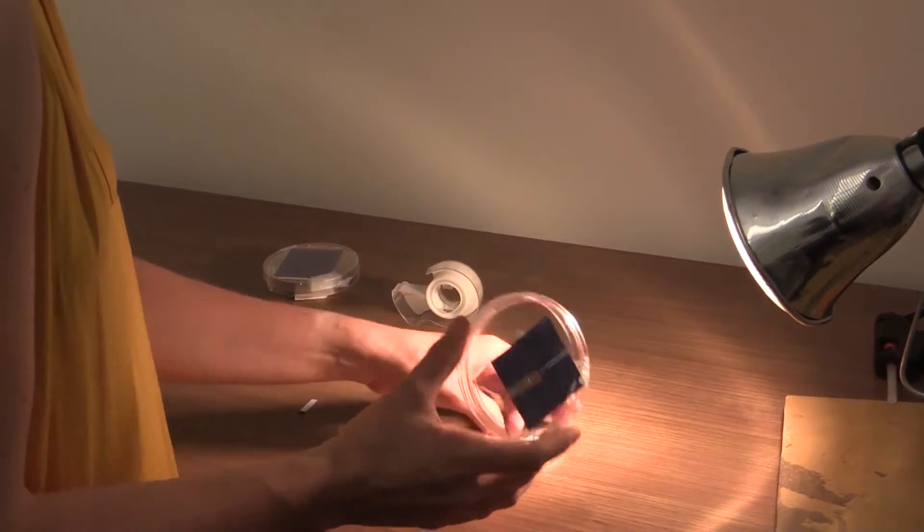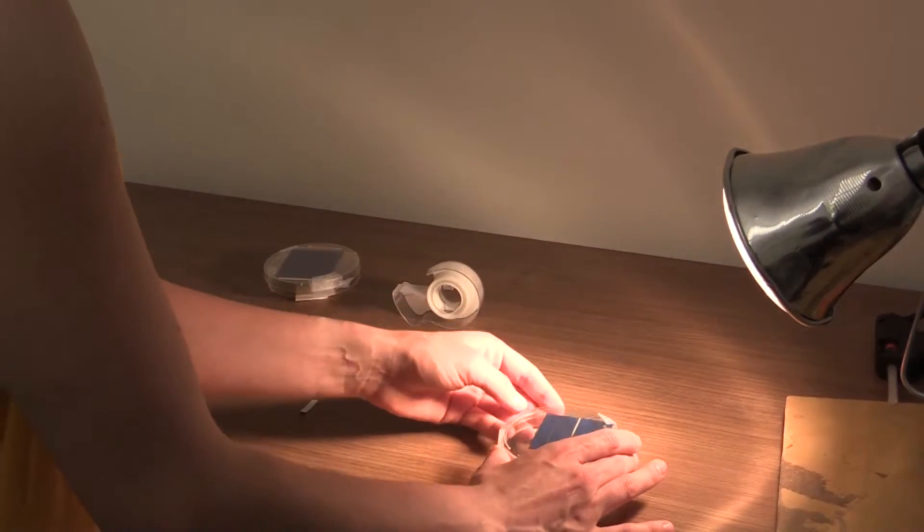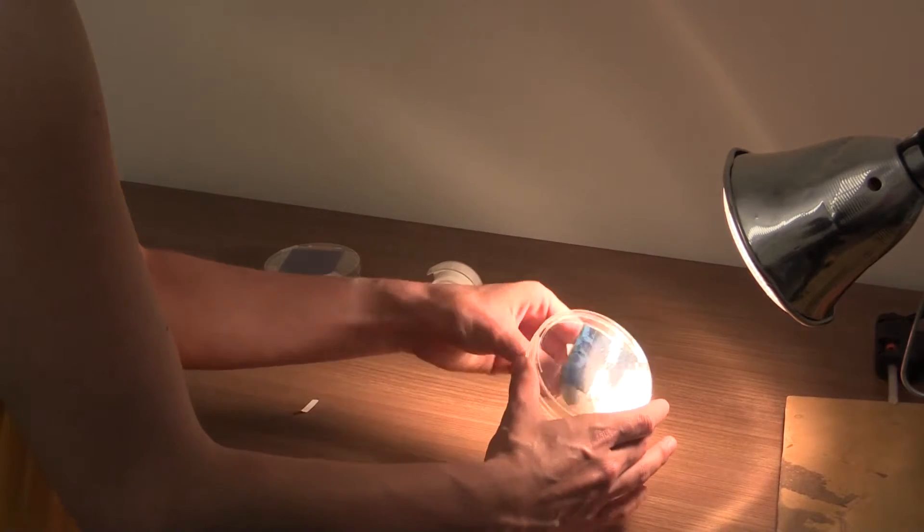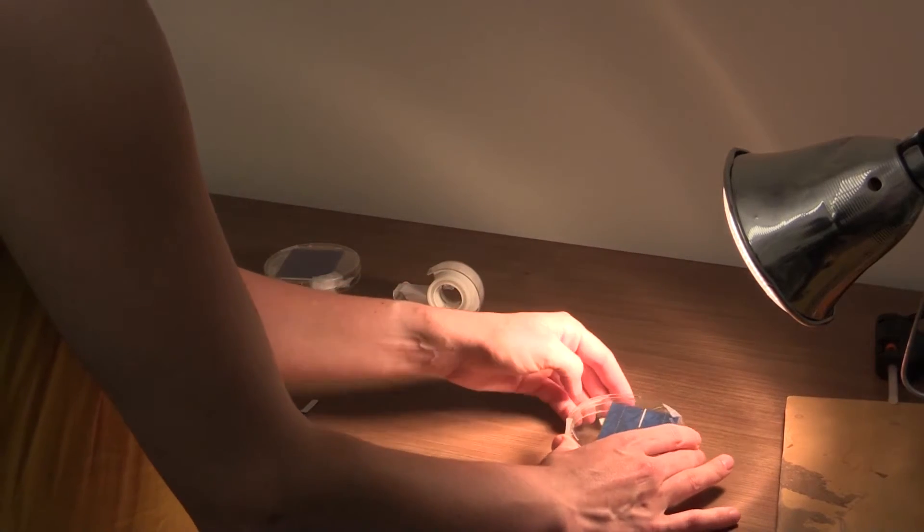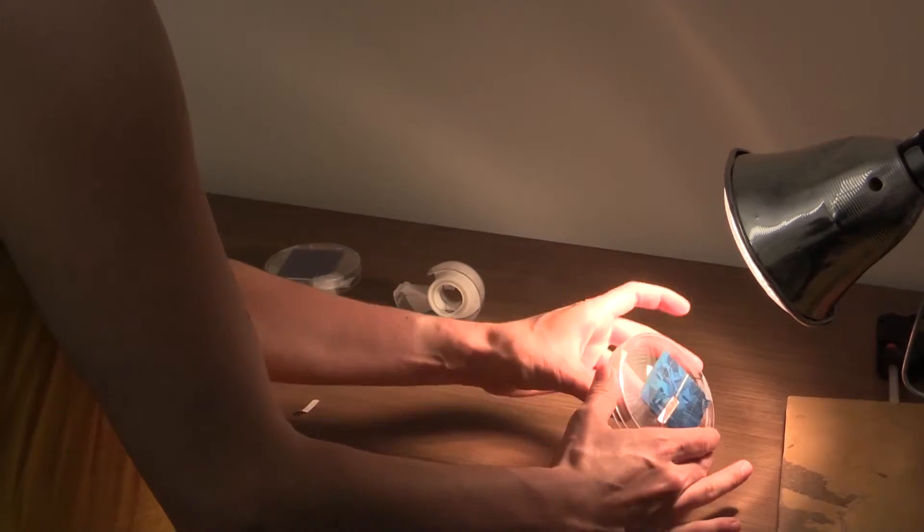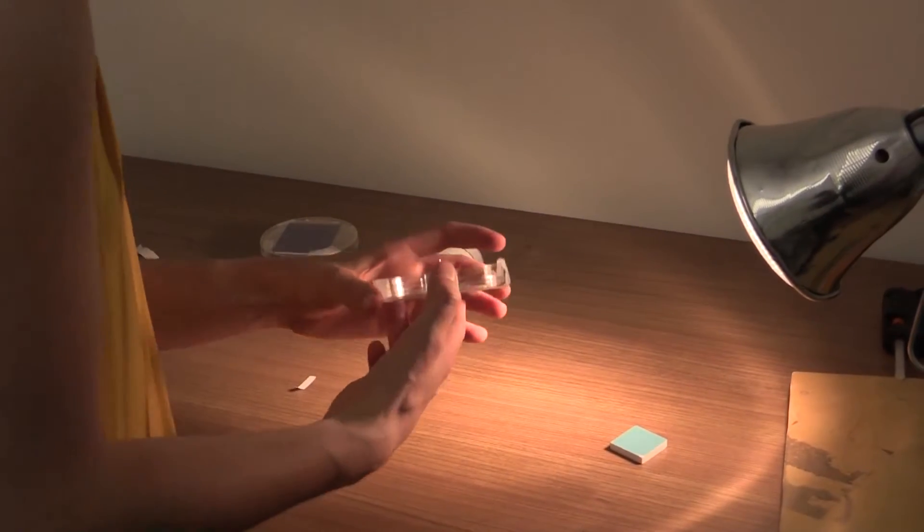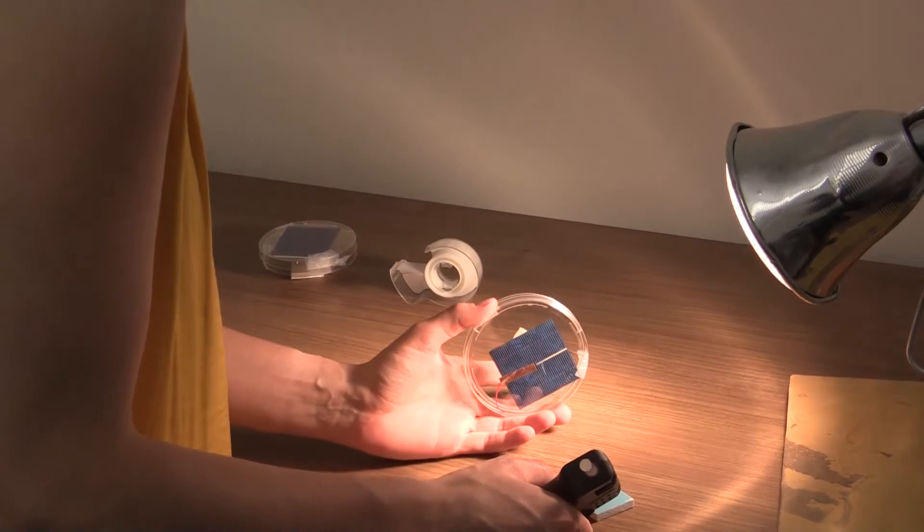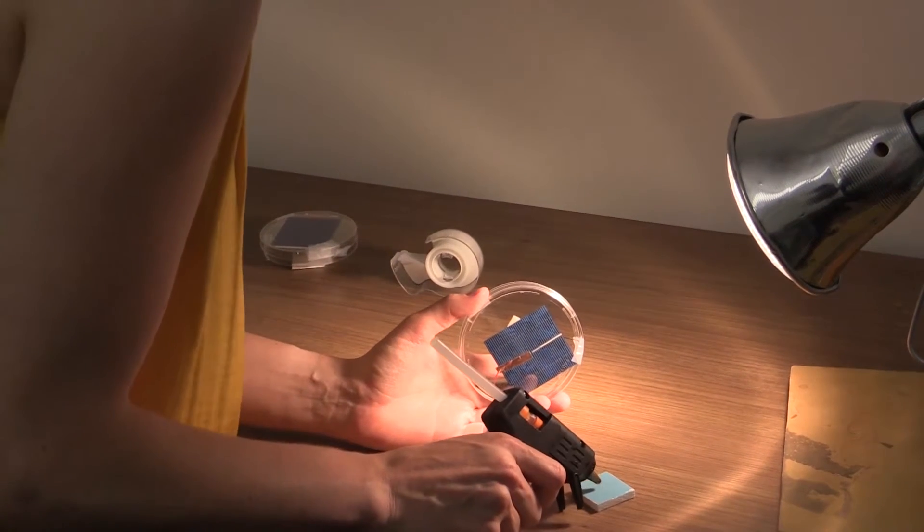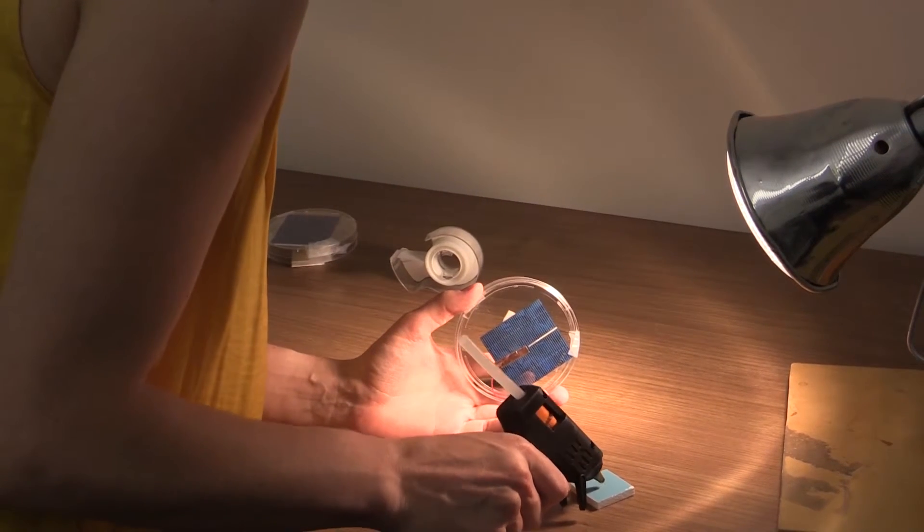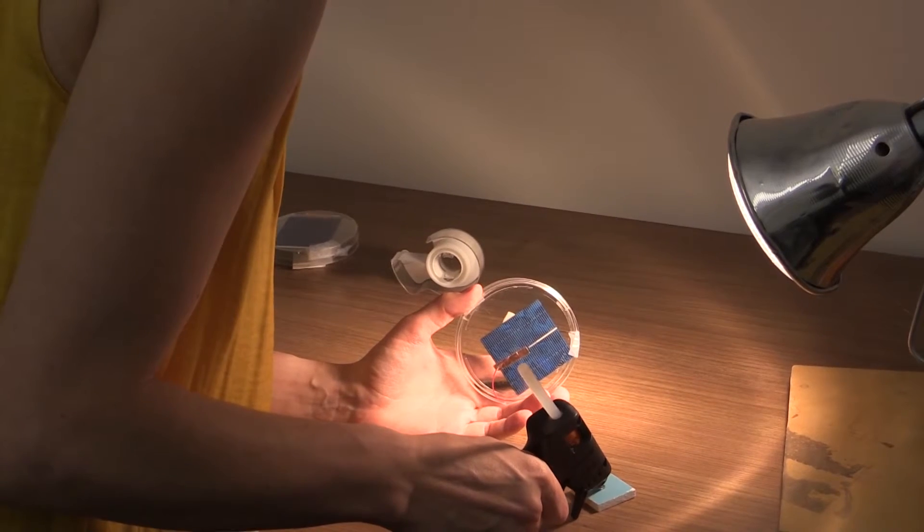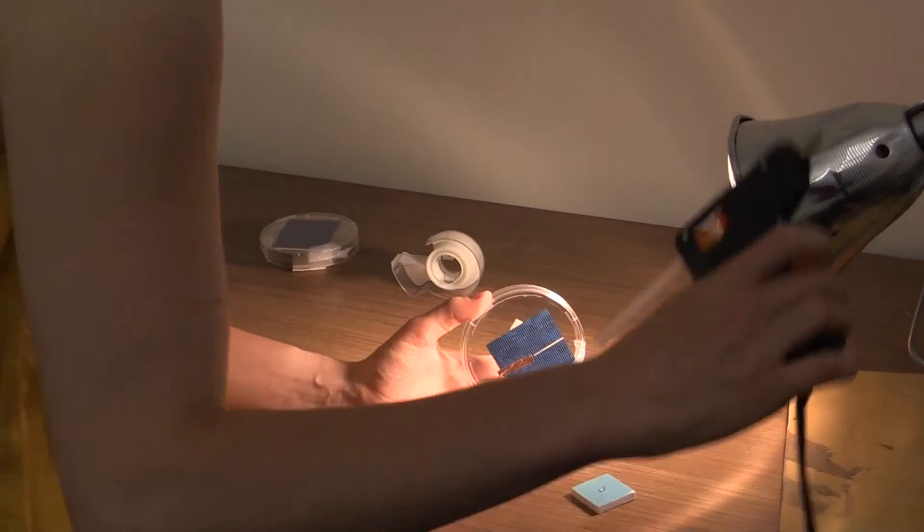Once everything is taped, test your solar panel one more time to make sure nothing broke while putting the cover on. The final step is to take just a drop of hot glue and put it over the hole on the base.